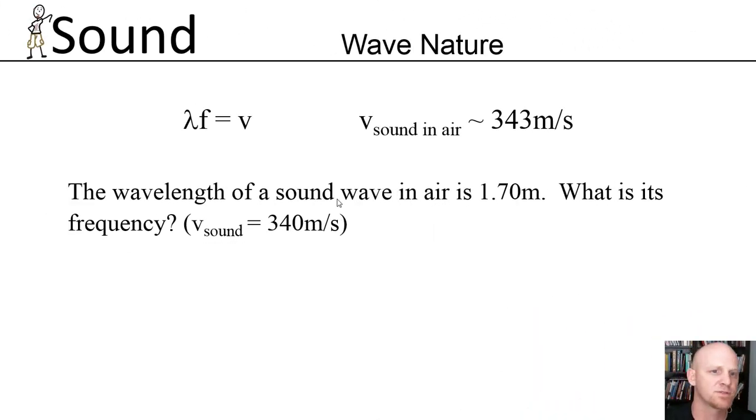So sound being composed of waves, we can look at these waves, and they have a characteristic wavelength represented by the symbol lambda, as well as a frequency. And as is the case for any wave, the wavelength times the frequency always equals the speed of the wave. In this case, I've given you the average velocity or the speed of sound in air, 343 meters per second.